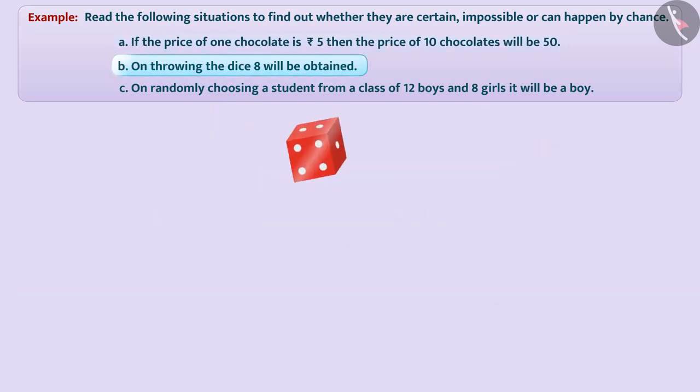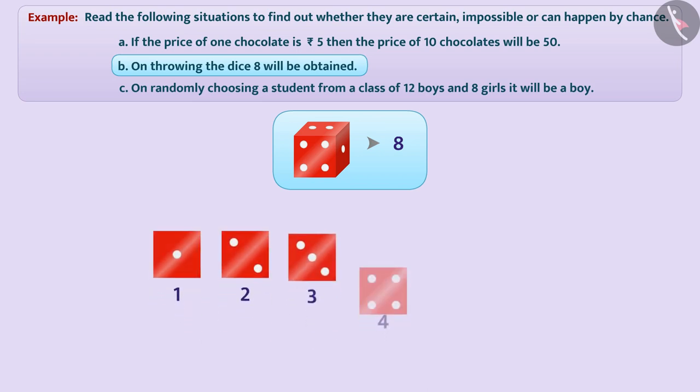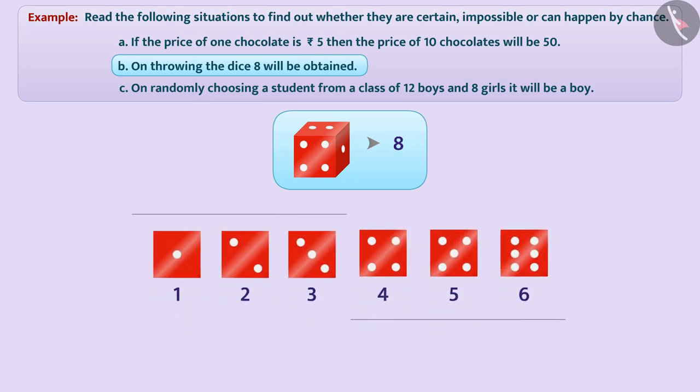On throwing the dice, 8 will be obtained. On dice, only numbers 1, 2, 3, 4, 5, and 6 are marked. It is impossible to get 8 when the dice is thrown.